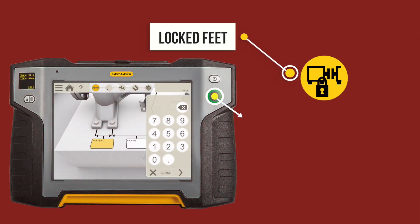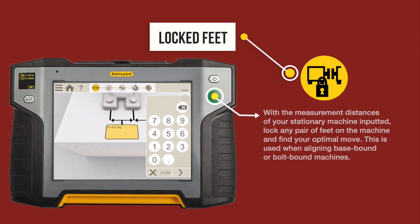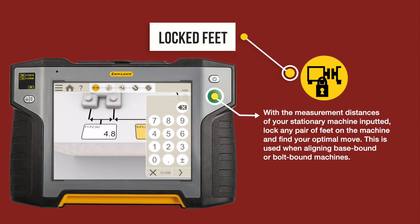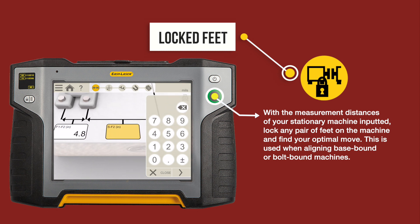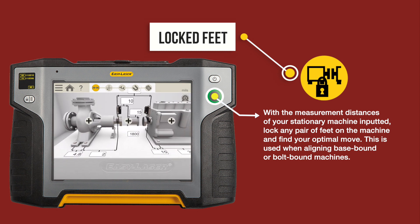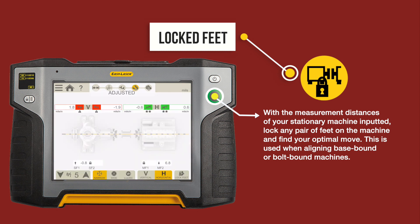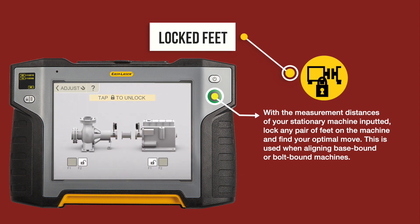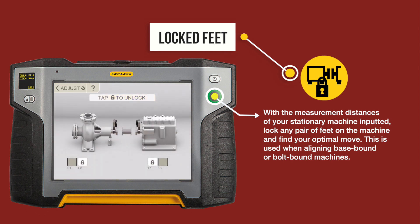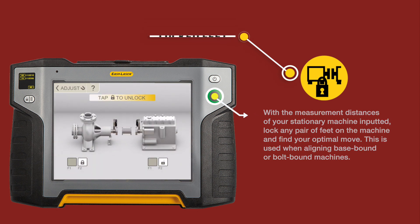Locked feet. With the measurement distances of your stationary machine inputted, lock any pair of feet on the machine and find your optimal move. This is used when aligning base-bound or bolt-bound machines.